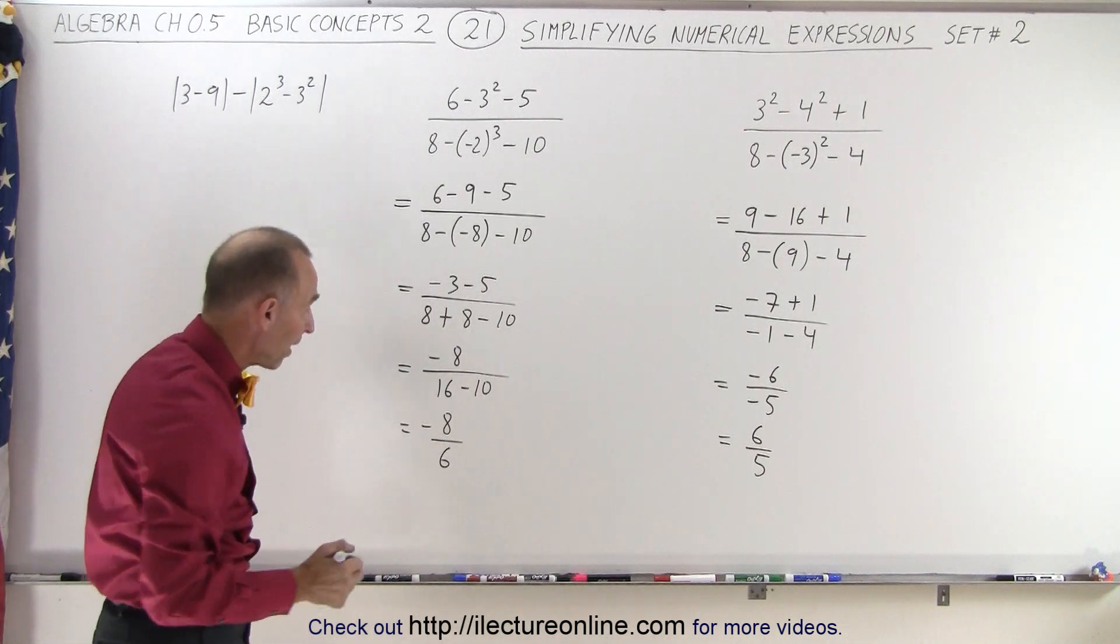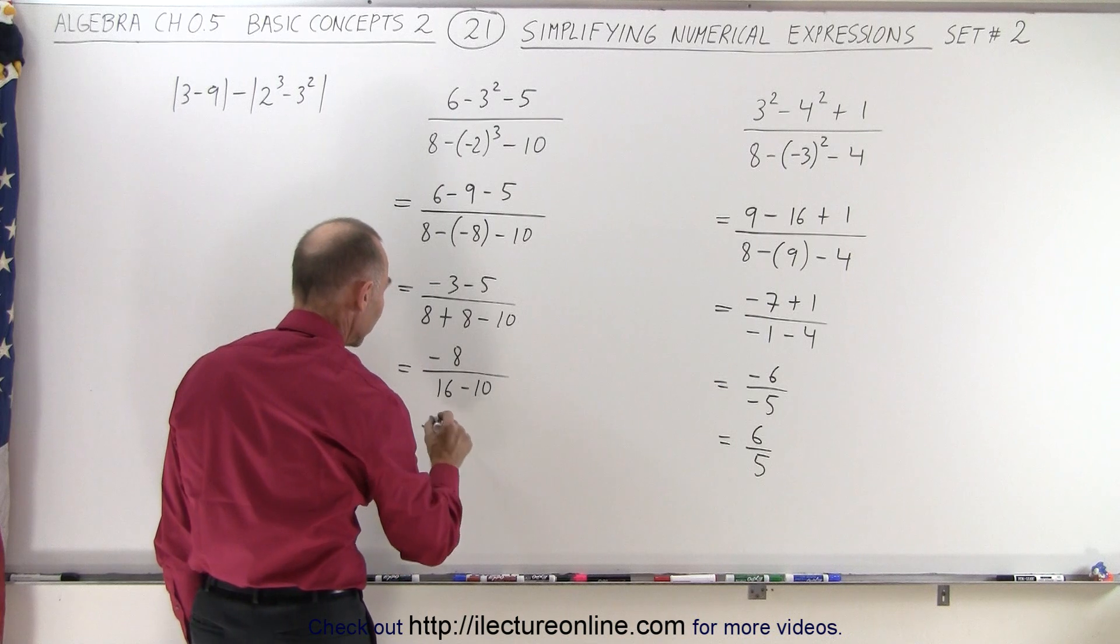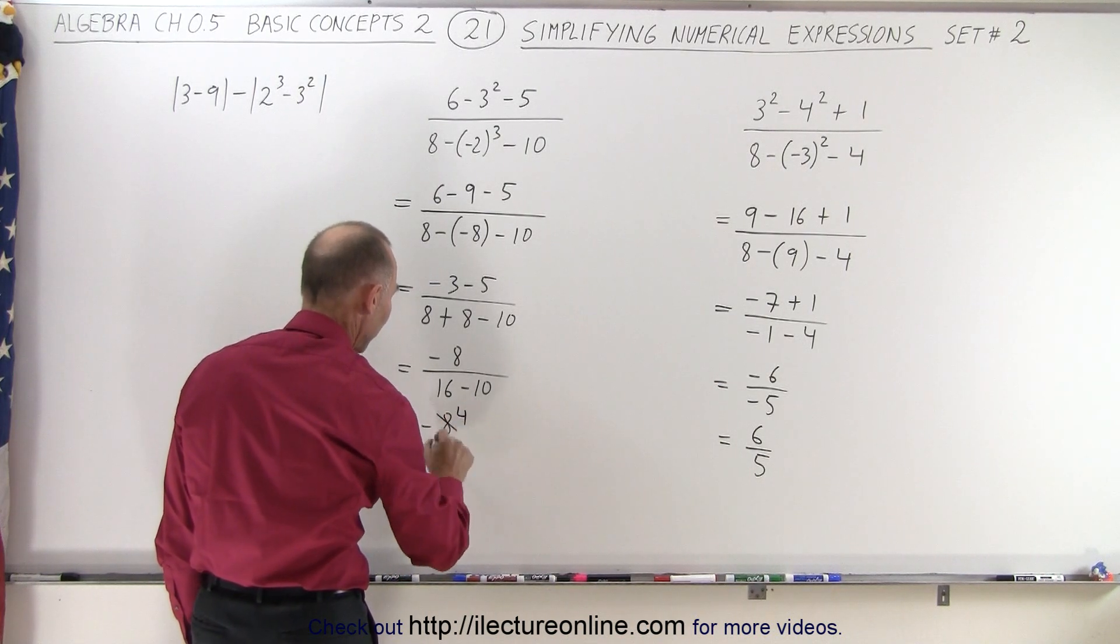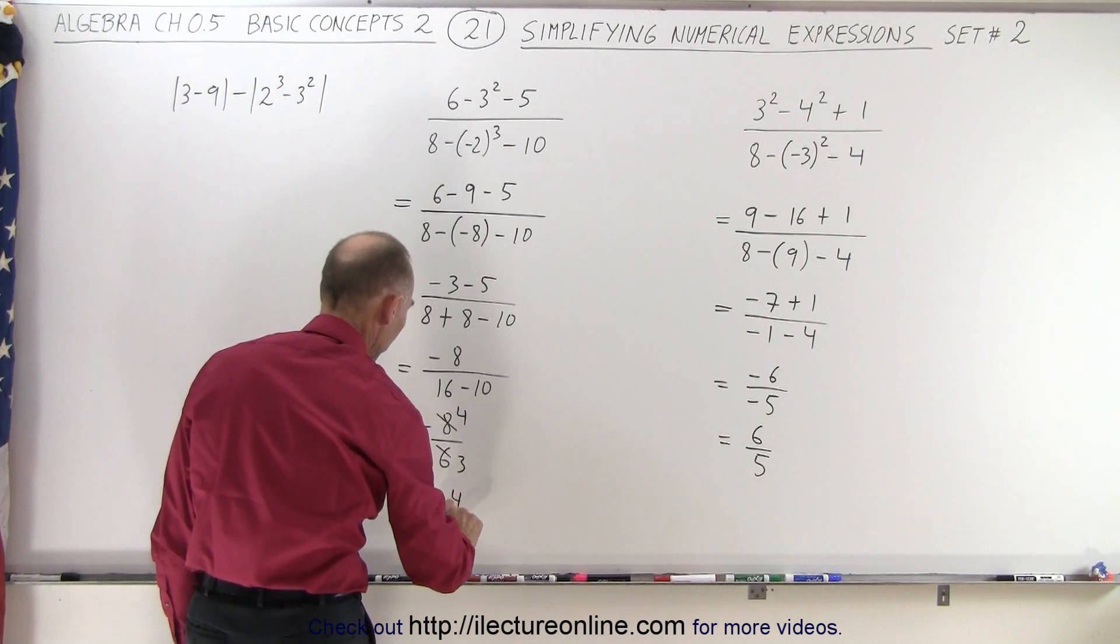Now I can simplify by dividing both the numerator and the denominator by the same number. I can divide by 2. Divide by 2, I get 4. Divide by 2, I get 3. So ultimately, this becomes minus 4 over 3.